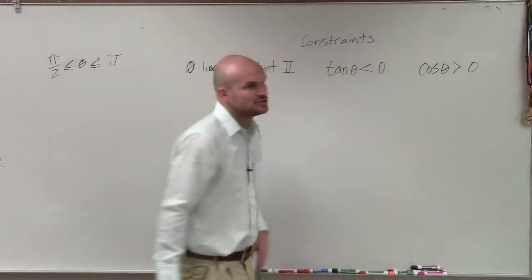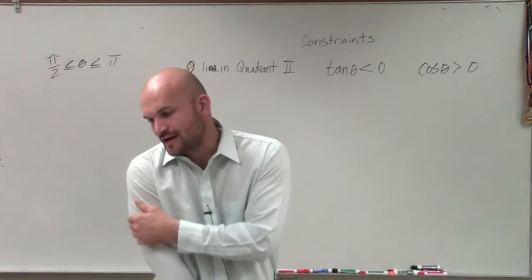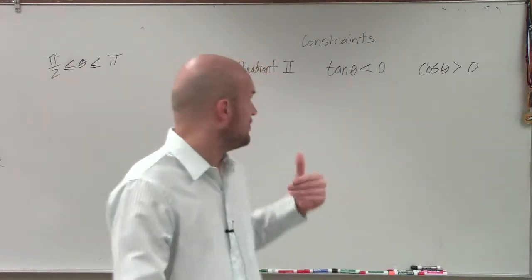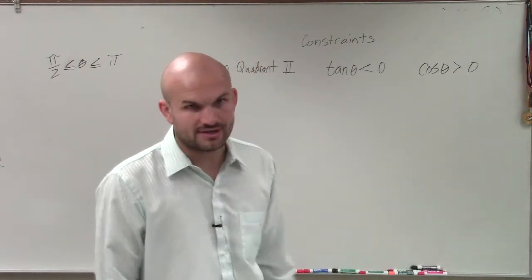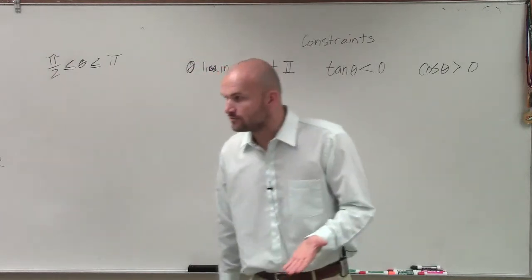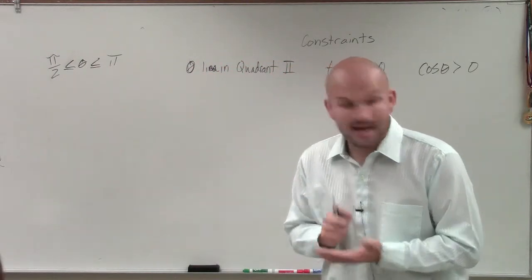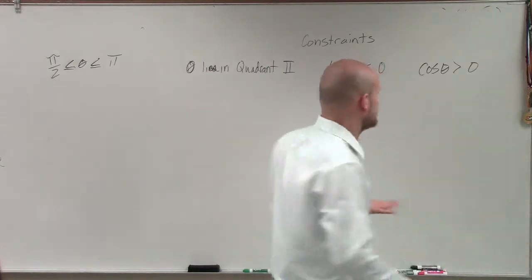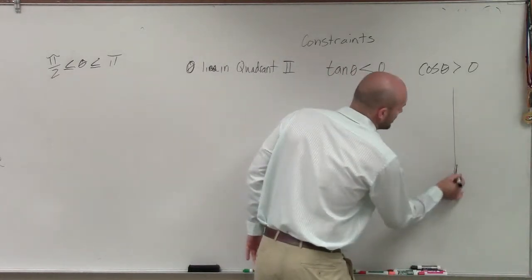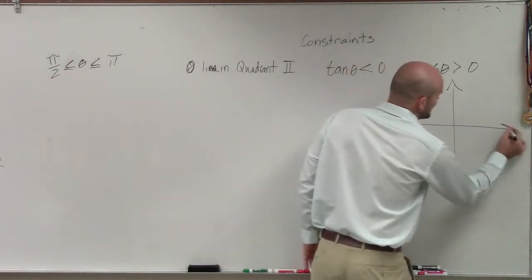So anyways, let's say I give you a constraint. I want you to find the value of an angle when cosine of theta is greater than 0. So remember, cosine represents the what coordinate on the unit circle? X. So when is X positive? Let's go and look at a coordinate. When is X positive?